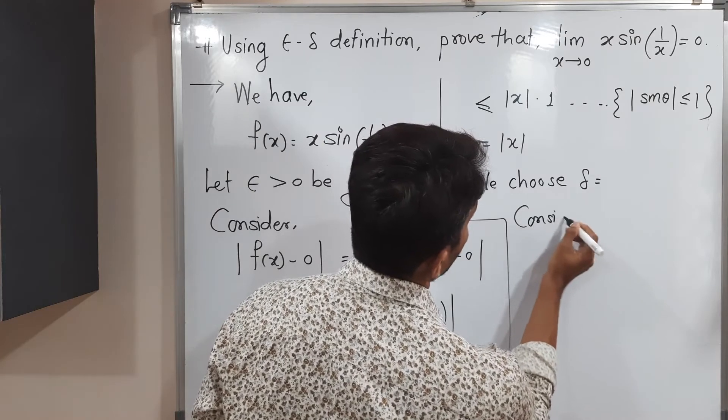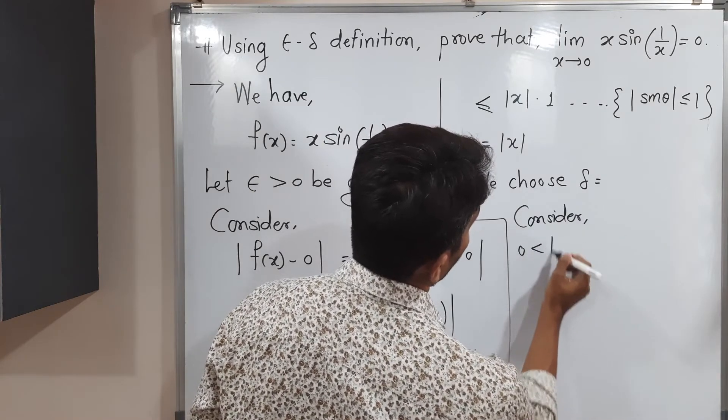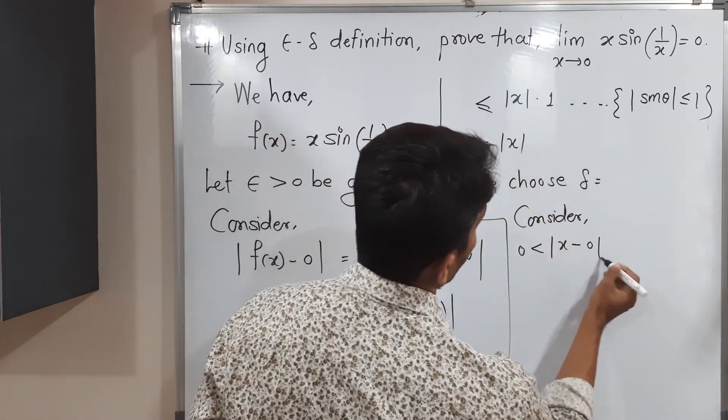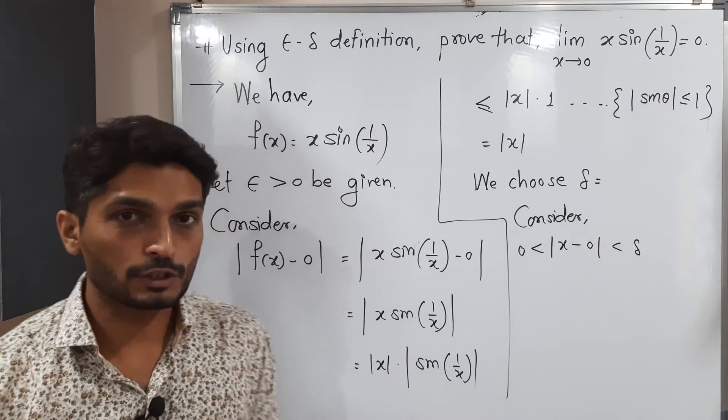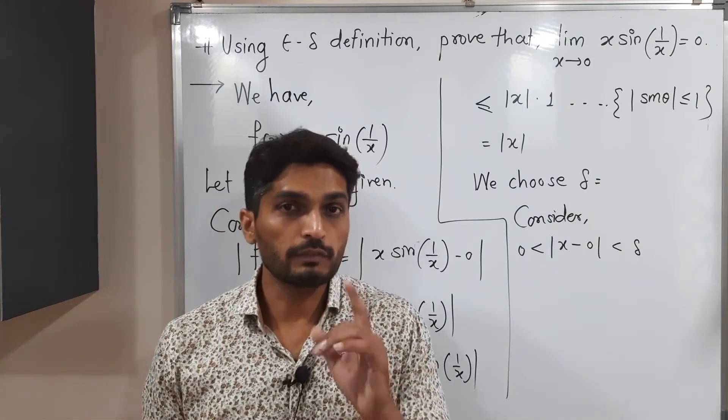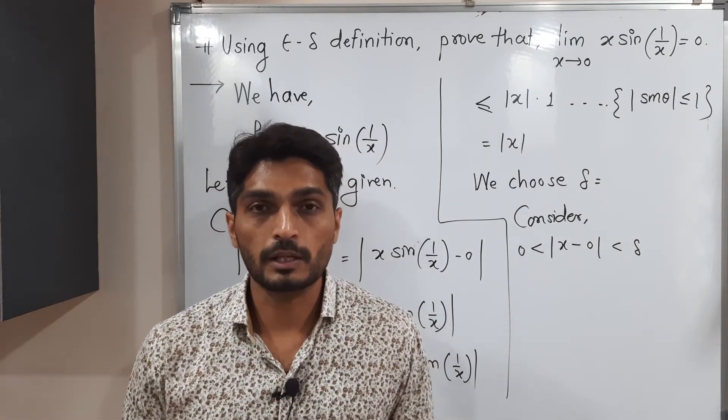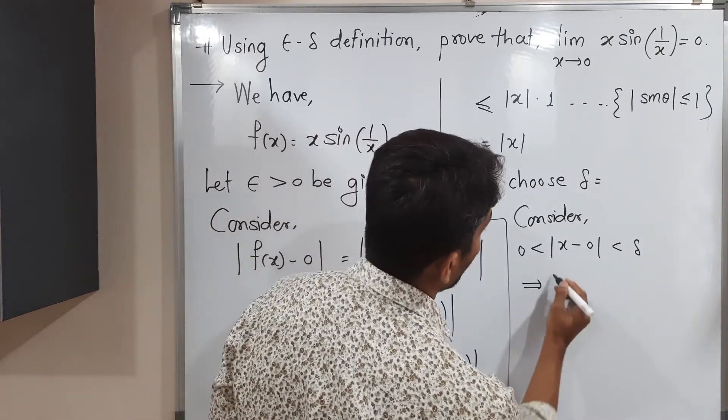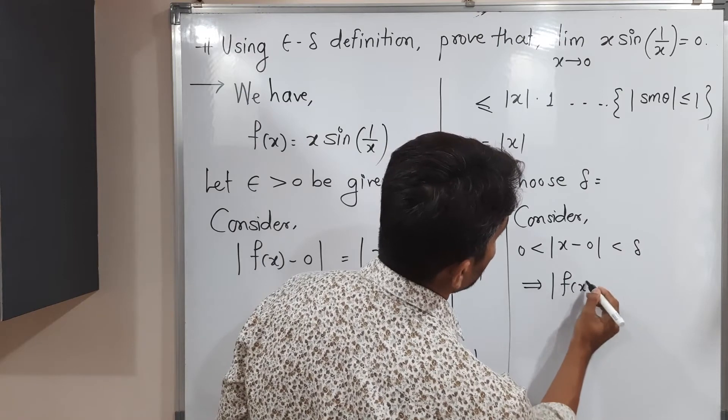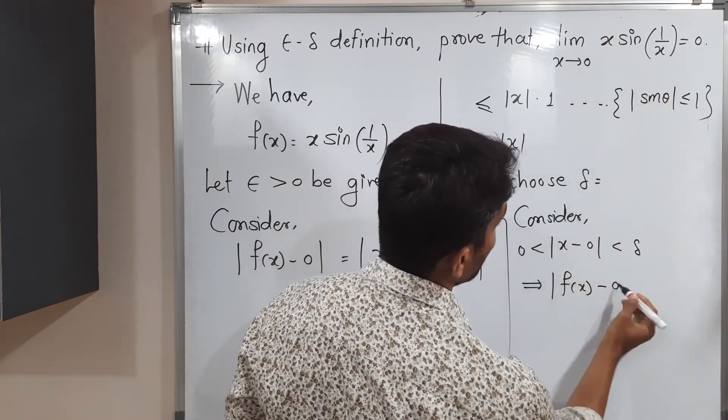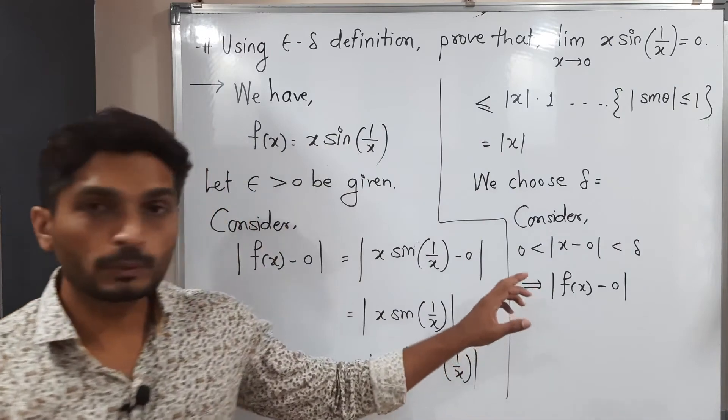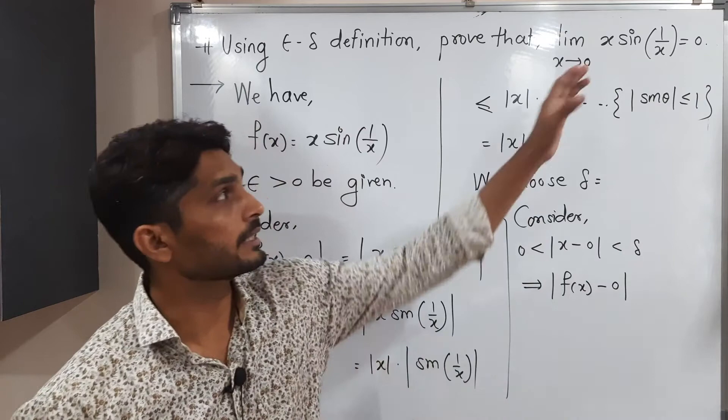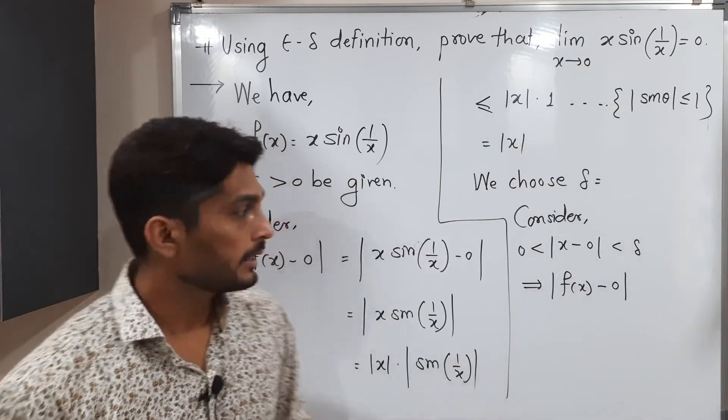Consider, I am considering 0 less than mod x minus 0 less than delta. This thing we have to consider by definition. Implies mod f of x minus L, what is my L? 0 here. And we have to prove that this is less than epsilon. Then we can say definition is satisfied and we get this result.